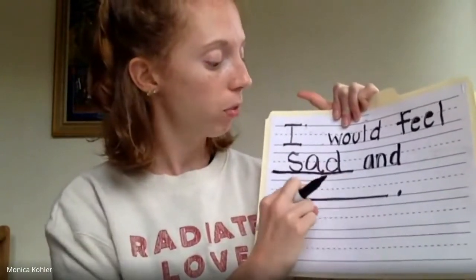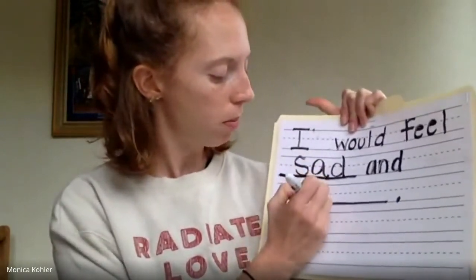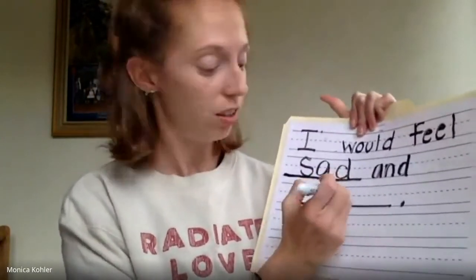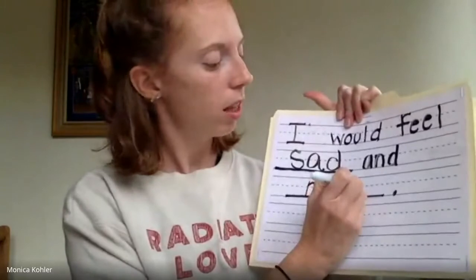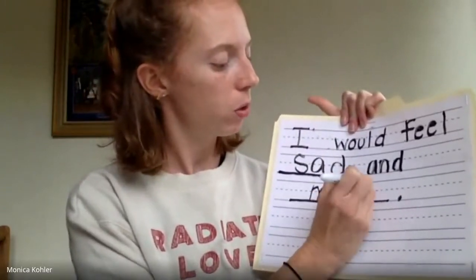Here's our sight word and. Then I'm going to write the word mad on this line. Mad, the first sound I hear is an M, so I'm going to write my M right here. Mad, I hear an A again, so I'm going to write an A. Mad, the last sound I hear is a D, so I'm going to write a D.